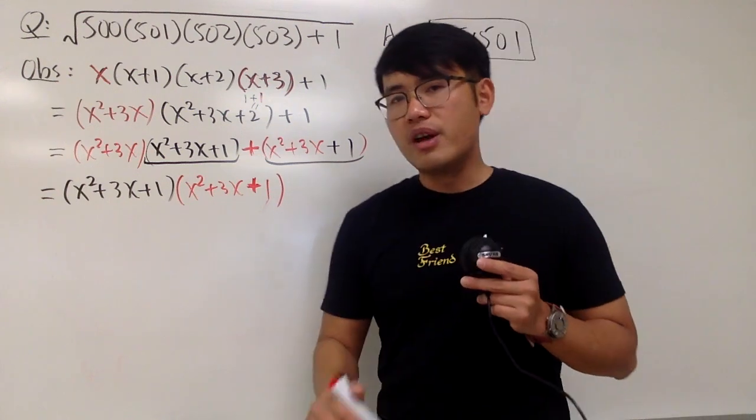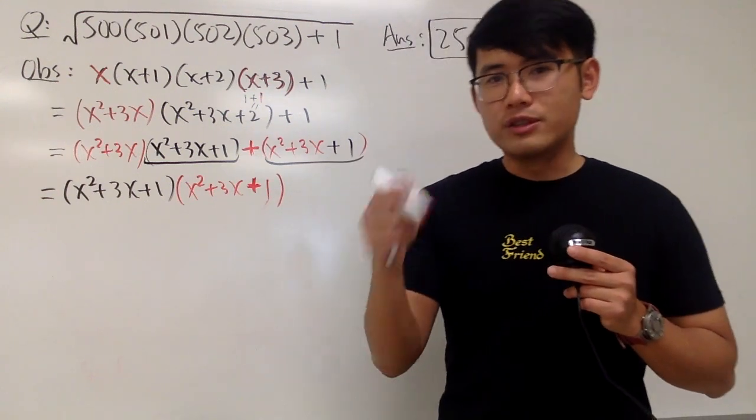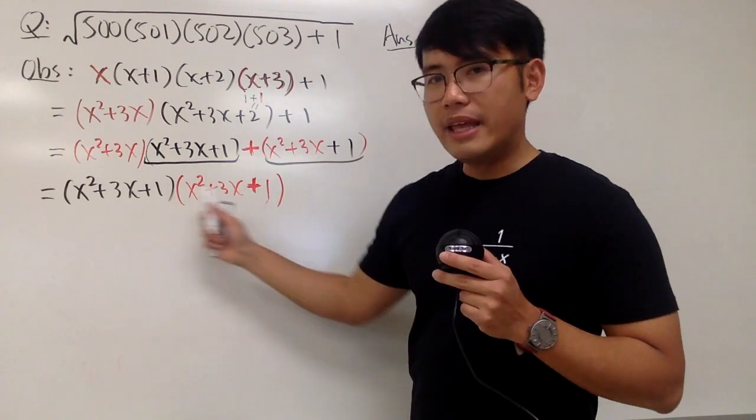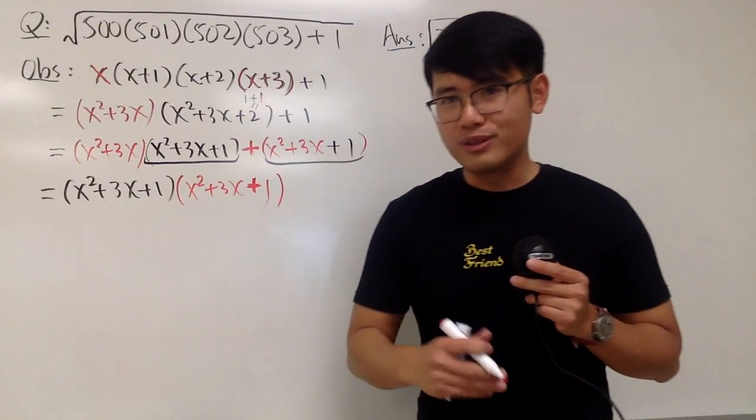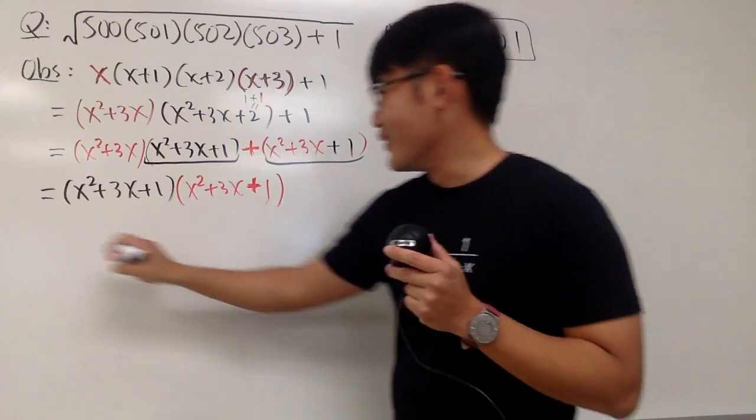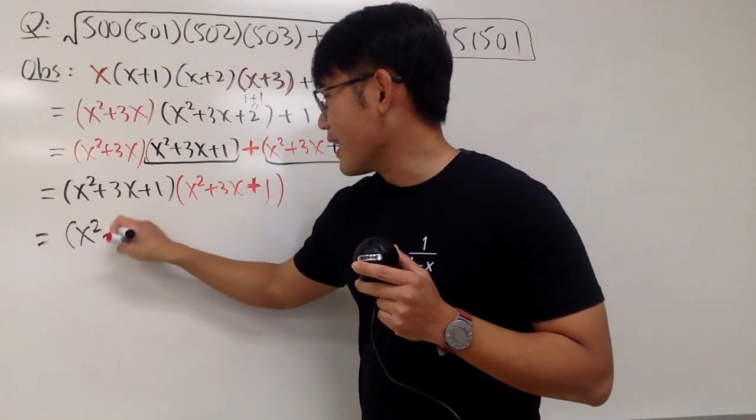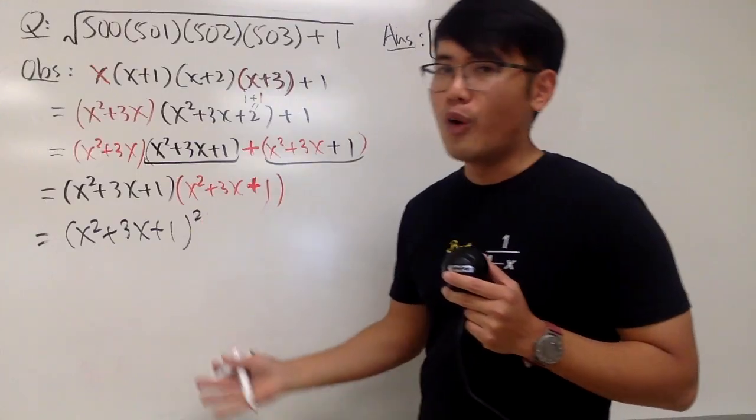As you all know, the best friend of black pen is, of course, red pen. This and that. They are best friends. Why? Because together they produce a perfect square. So we get x squared plus 3x plus 1 to the second power. This is very nice.